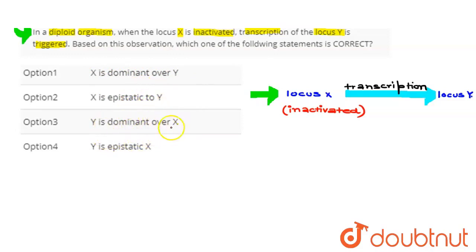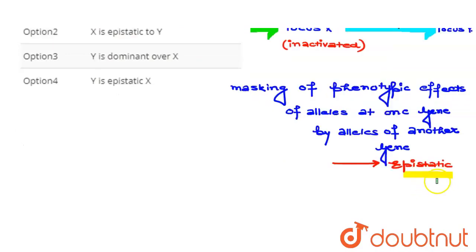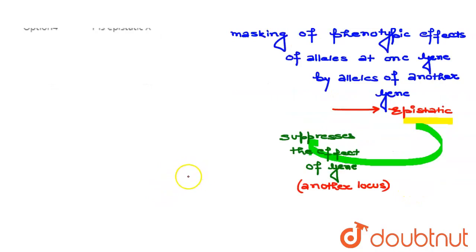Third option given is Y is dominant over X and last option given is Y is epistatic to X. Okay, so when there is masking of phenotypic effects of alleles at one gene by alleles of another gene,